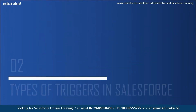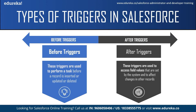Now let us move on to the types of Salesforce triggers. There are two types: the before trigger and the after trigger. Before triggers are used to perform a task before a record is inserted, updated, or deleted. They are usually used to update or validate record values before they are saved to the database. After triggers are used to access field values already set by the system, such as a record's ID, date, or phone number field, and to affect changes in other records. They are used to update or validate record values after they are saved to the database. Also, after triggers are read-only — you cannot make any changes to them.